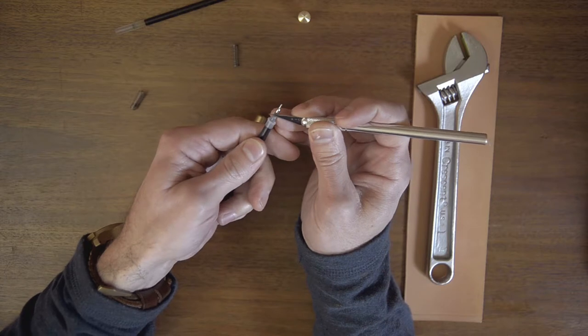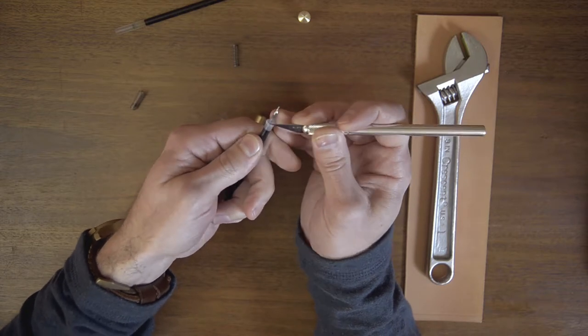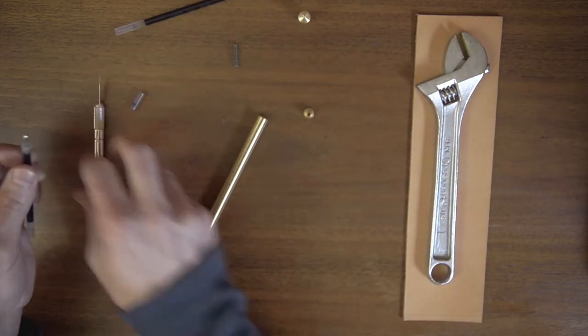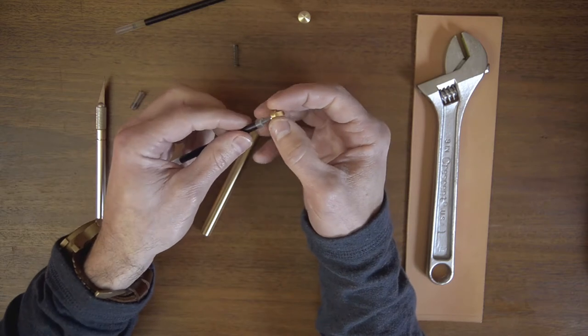Two or three of them, shave them back a little bit and it makes it a little bit easier for the threaded insert to go on.